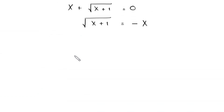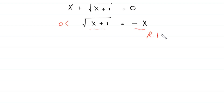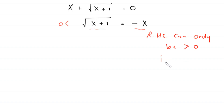Now, this expression at the left hand side must be greater than 0. Due to this negative sign, the right hand side can only be greater than 0 if x is less than 0.